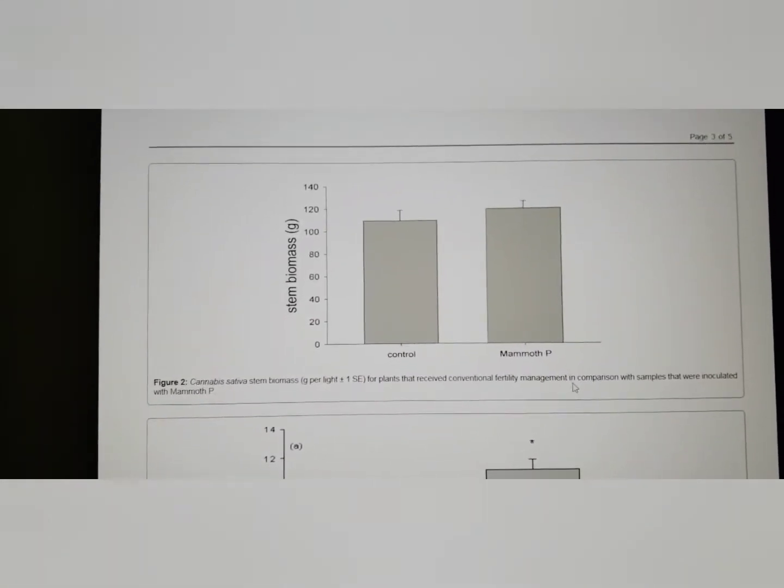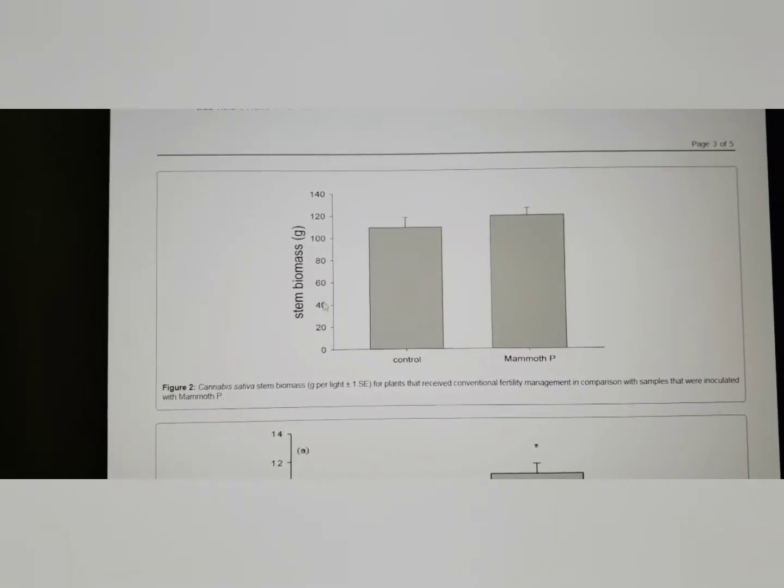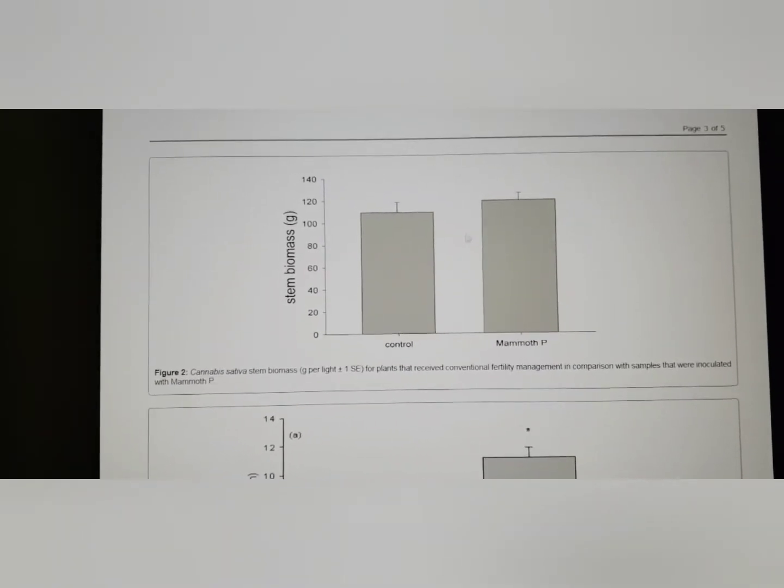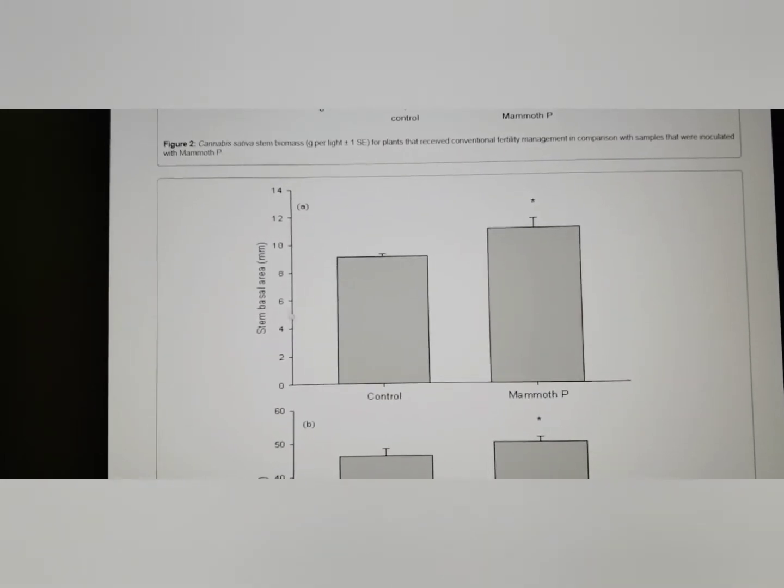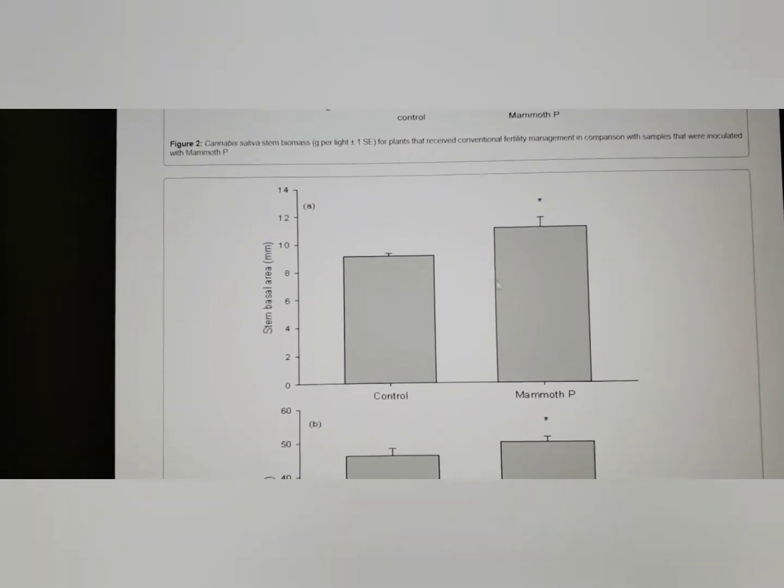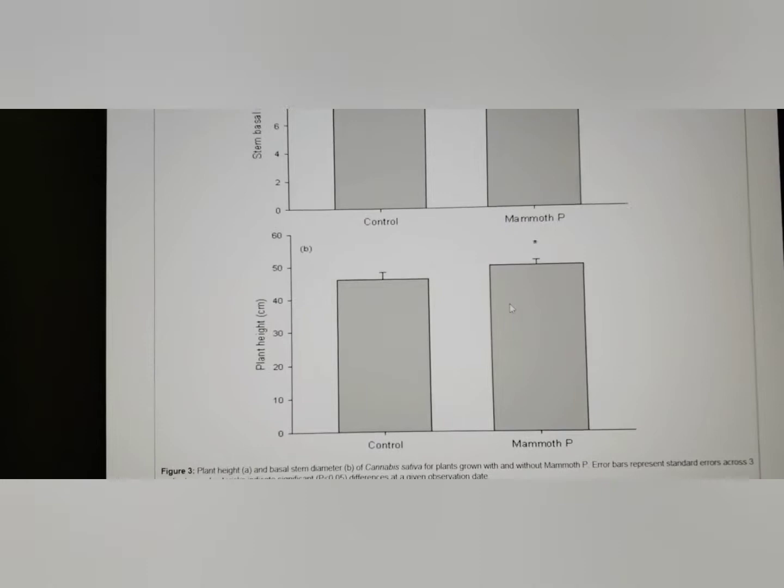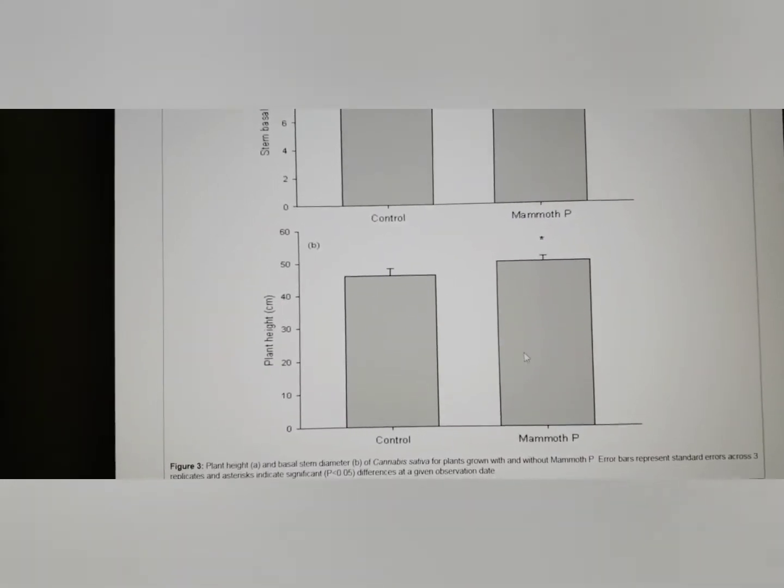So let's scroll down. You get a few more charts. Stem biomass, mammoth P was higher. Stem basal area, mammoth P was higher. Plant height, mammoth P was higher.